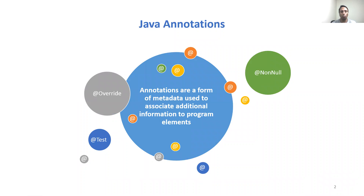Annotations are a form of metadata used to associate additional information to program elements. We are all familiar with some key annotations, such as override, nominal, and test.